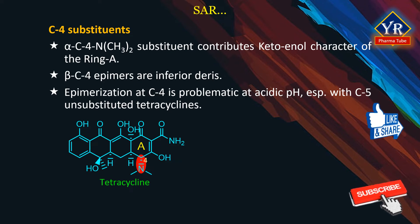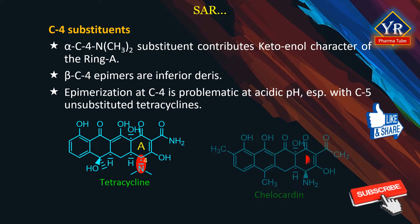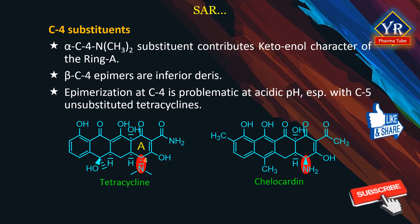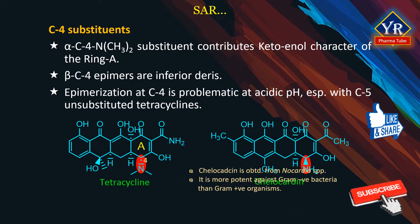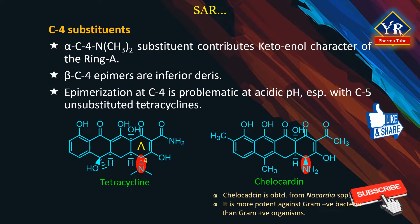Oxytetracyclines, that is C5 hydroxylated tetracyclines, are more resistant due to intramolecular hydrogen bonding. Kilocardine possesses a beta-C4 amine substituent that has an inverted configuration relative to the tetracyclines. Kilocardine is obtained from a different source, that is Nocardia species, than the tetracyclines, and unlike tetracyclines is more potent against gram-negative bacteria than gram-positive organisms.